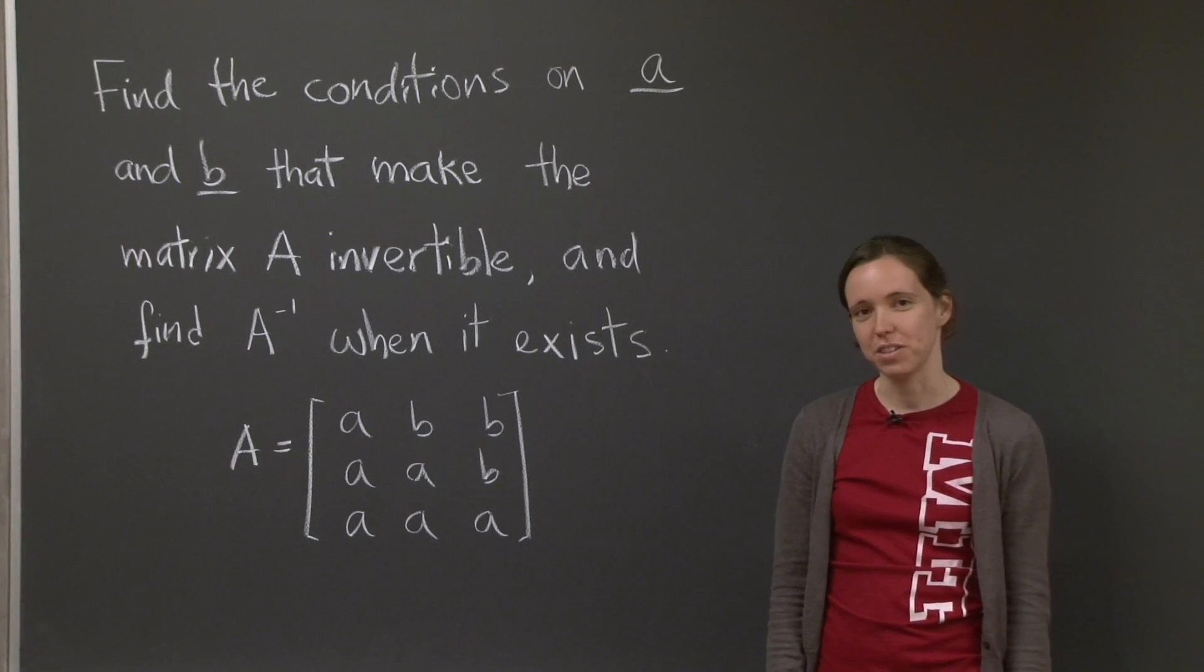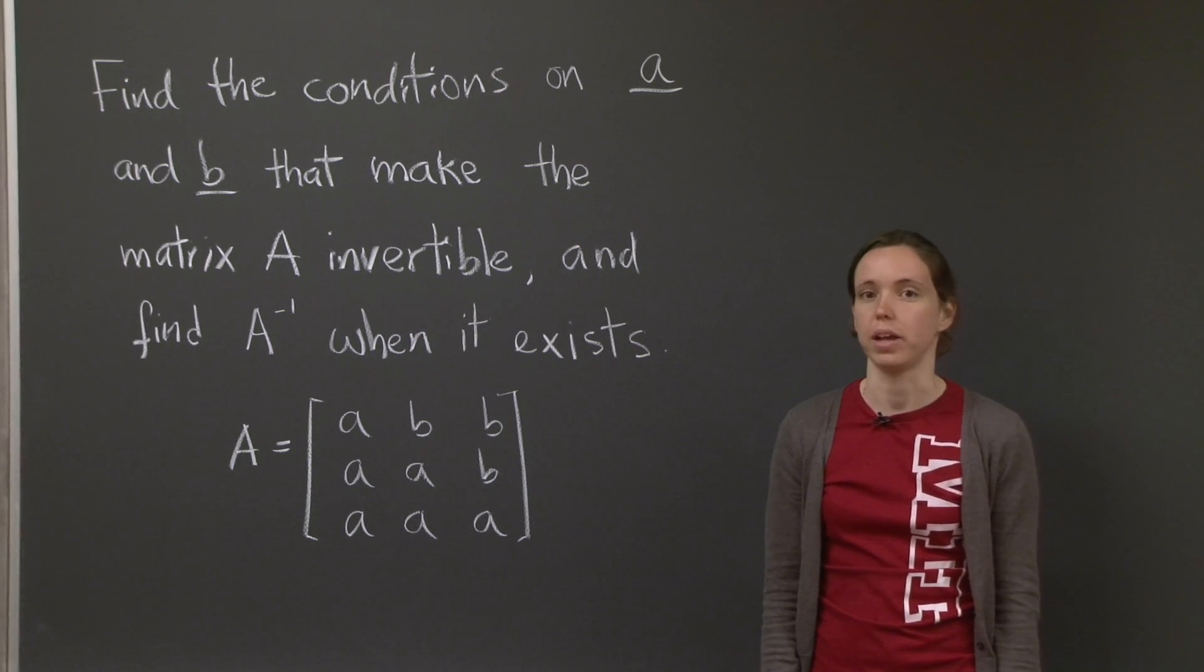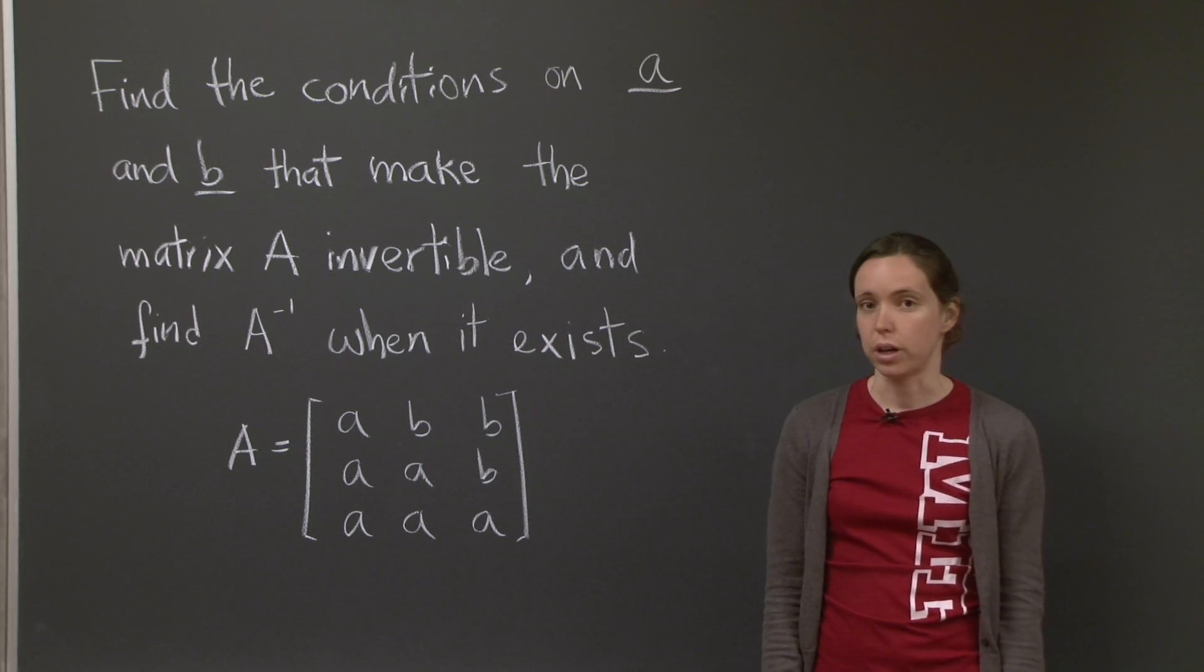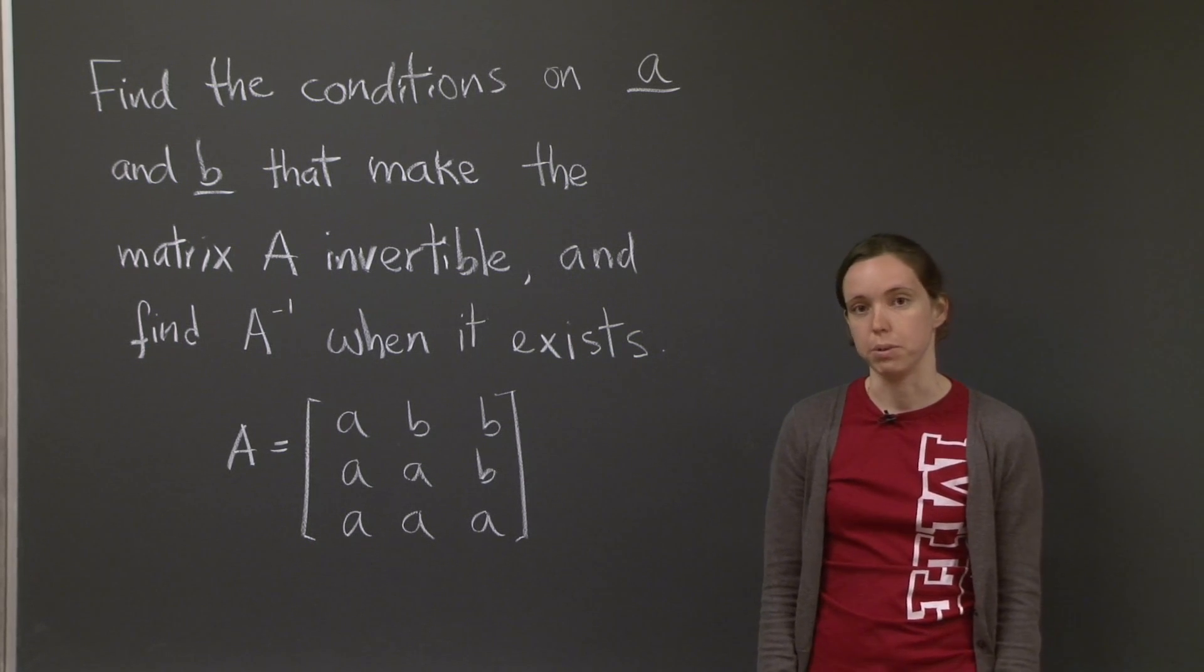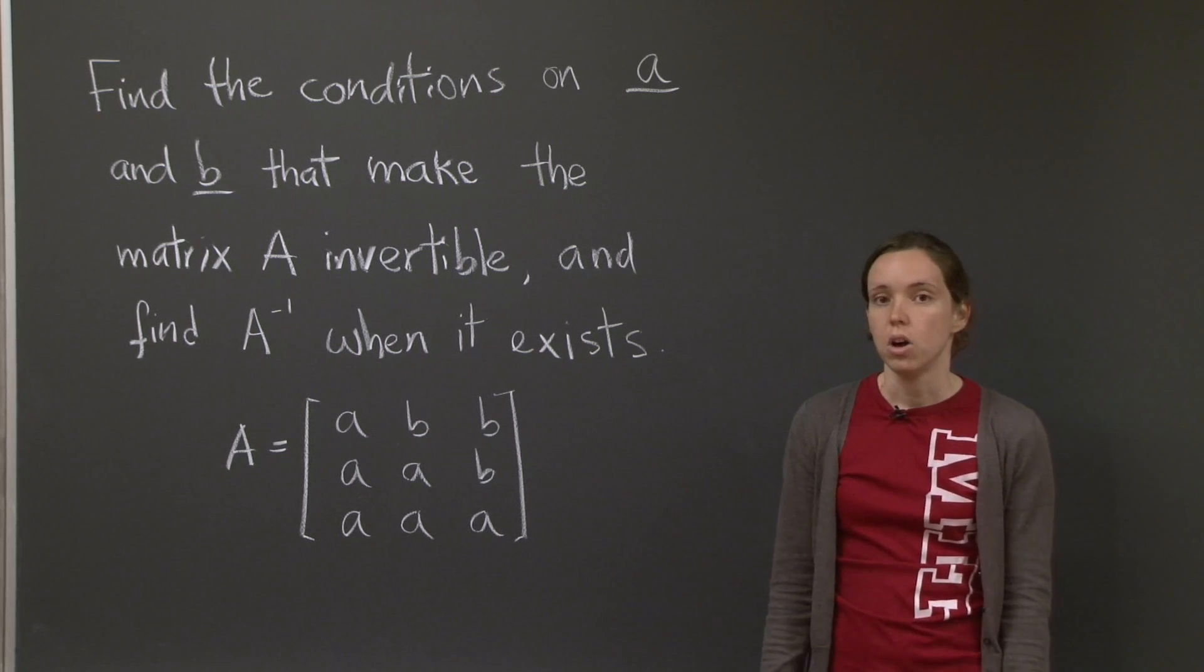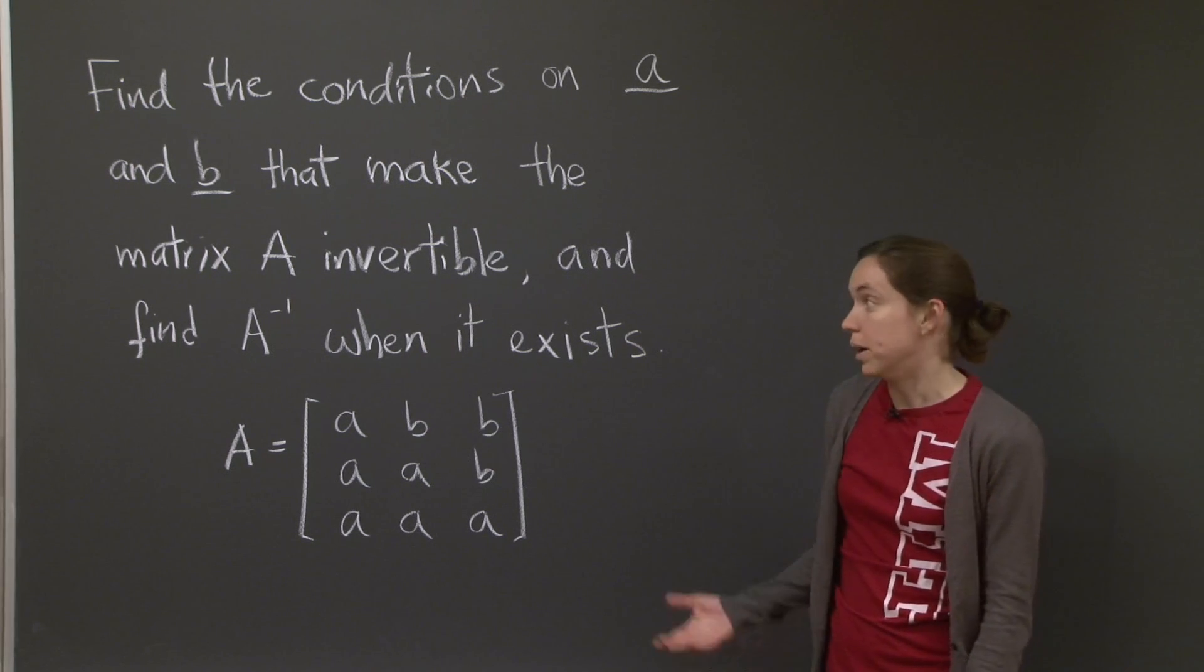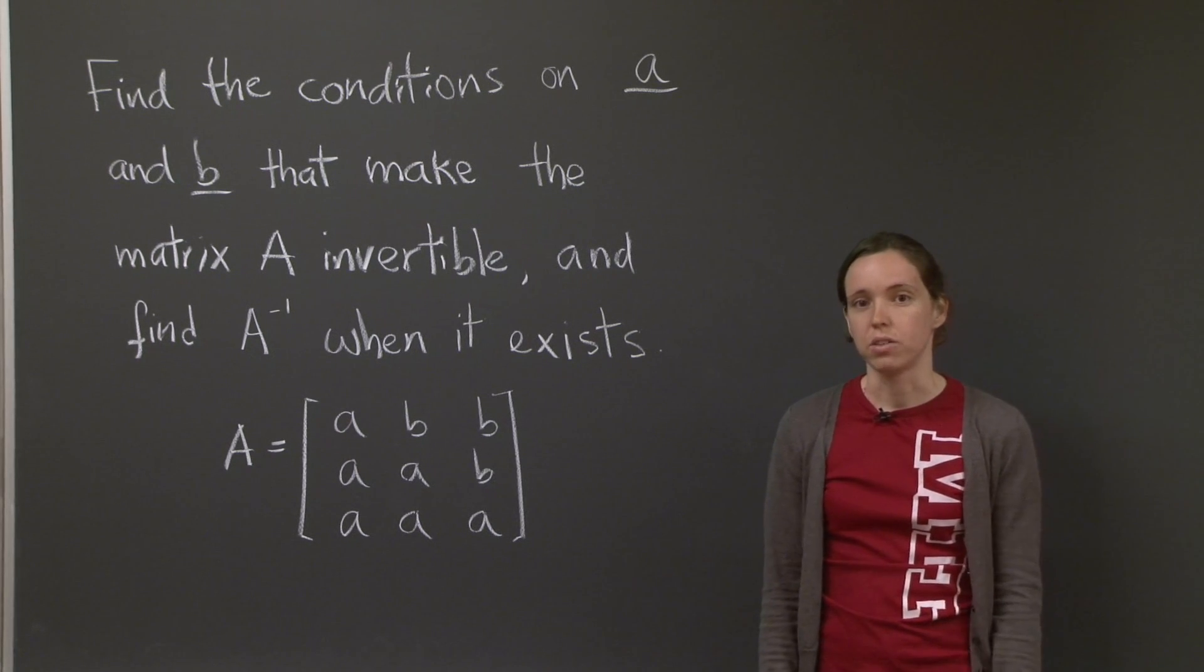Hi there. My name is Anna. Welcome to recitation. In lecture, you've been learning about how to multiply matrices and how to think about that multiplication in different ways, and also about when a matrix is invertible or not, and how to compute the inverse when it is invertible. And that's what today's problem is about. We have matrix A that has variables a and b instead of numbers, and the question is, what are the conditions on a and b that make that matrix invertible? And when it is invertible, what is A inverse? Why don't you hit pause and work on it for a little while, and then we'll come back and work on it together.